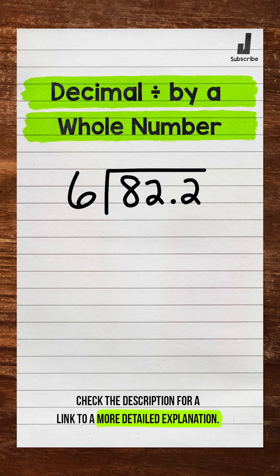Now the divisor, the outside number, is whole. That means we can bring the decimal straight up into the answer. Now we go through the division steps. Divide, multiply, subtract, bring down, repeat.